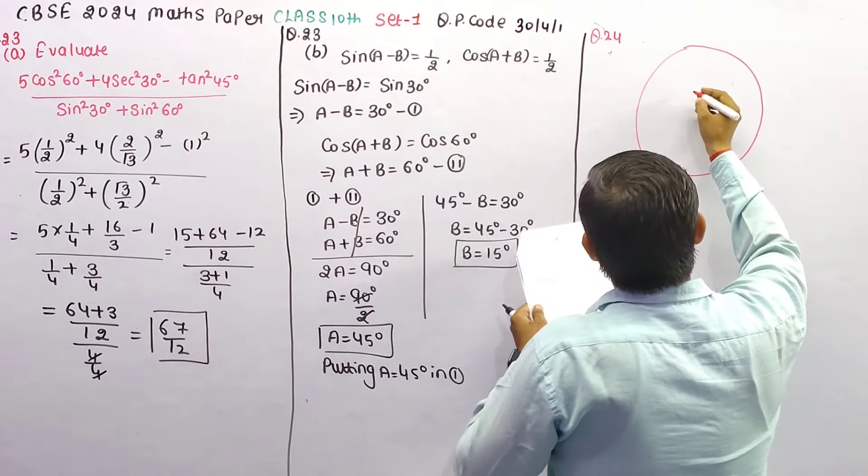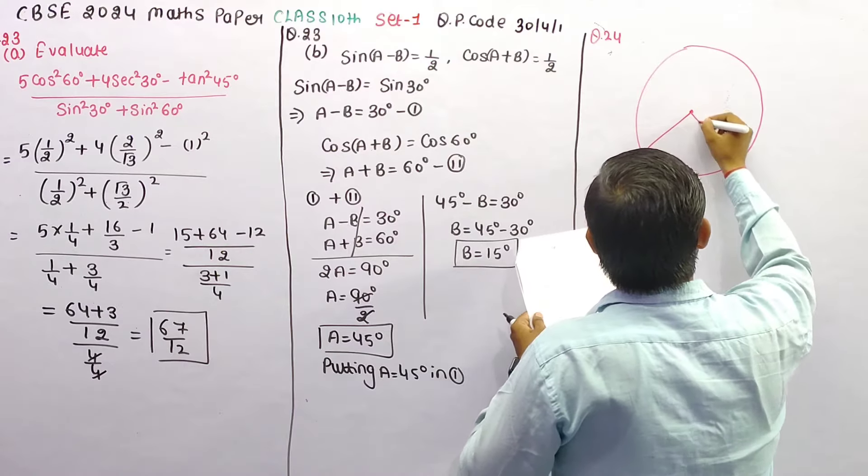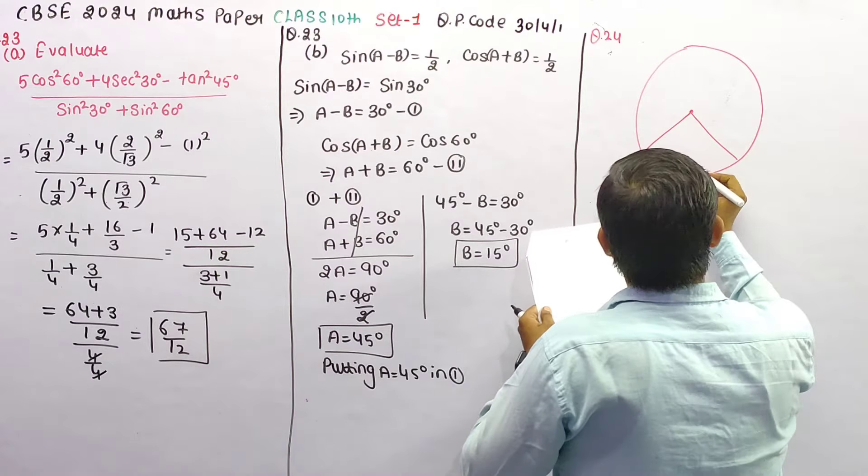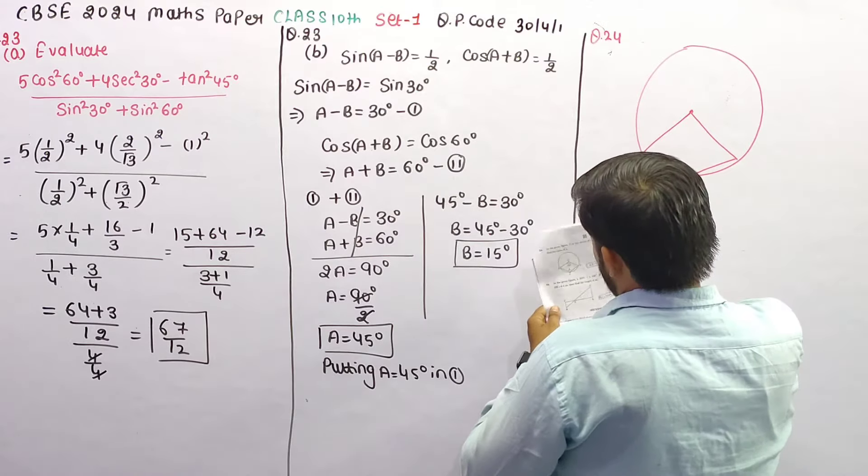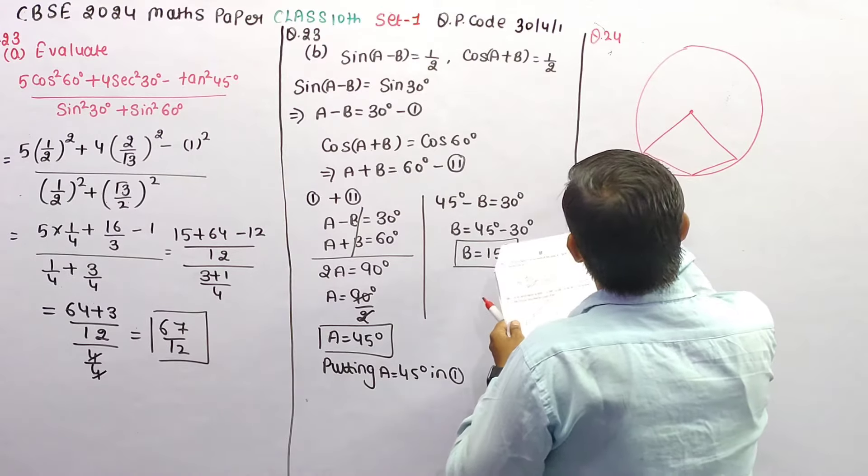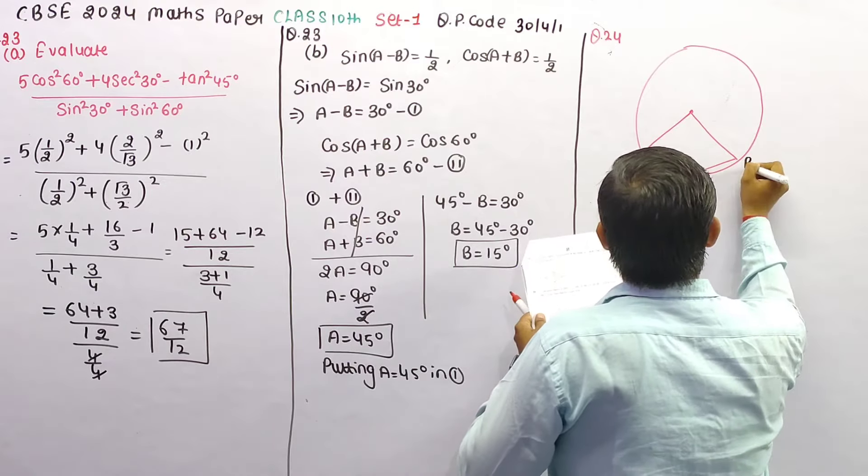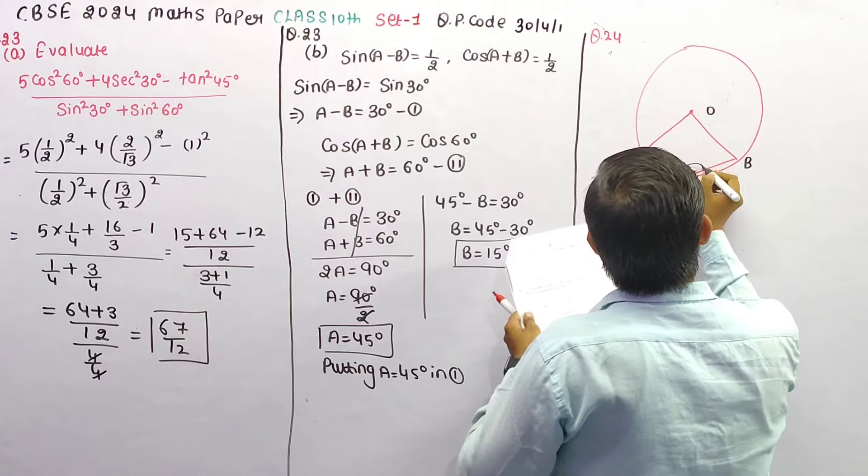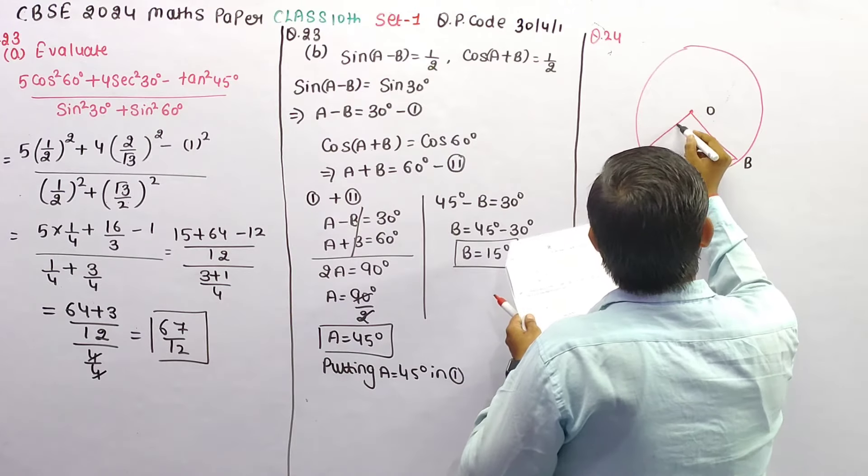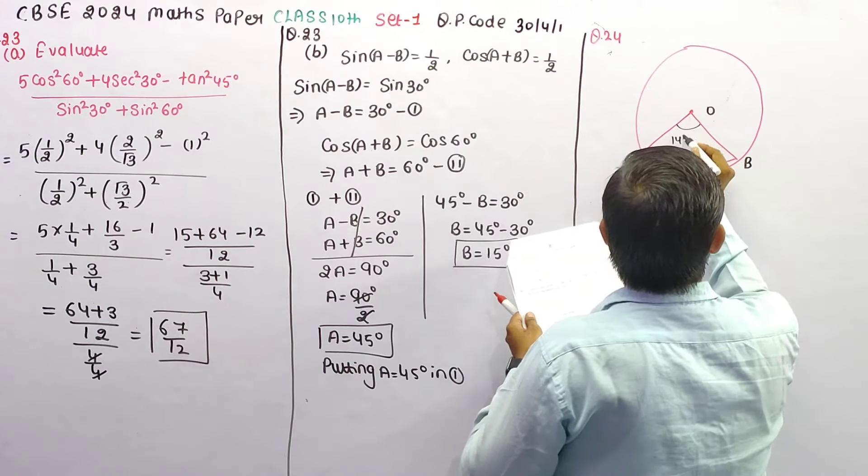This is the center. This is A, this is B, this is C and this is O. And this is the angle of X. This is the angle of 145 degrees.